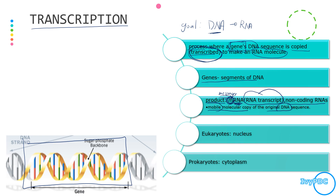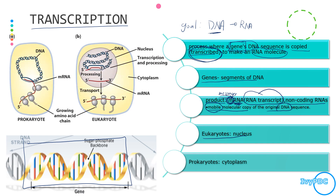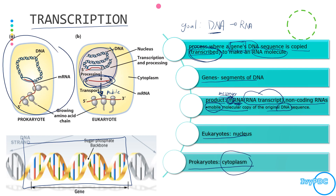When we say mobile, it means they are able to move. In eukaryotes, transcription happens in the nucleus, so after transcription the RNA transcript must move outside the nucleus to be processed further — that is why mobility is important. In prokaryotes, on the other hand, since there is no nucleus, transcription happens inside the cytoplasm.